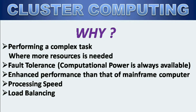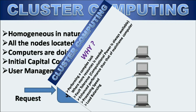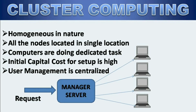Processing speed is also high and it balances the load — the complex task is distributed among various nodes, so load balancing is done in cluster computing. It is homogeneous in nature, meaning all the nodes, all the data points, all the computers are working on the same platform. All nodes are located in a single location. Computers are doing dedicated tasks — whatever task is assigned to individual nodes, they are dedicated to doing that. The initial capital cost for setup is very high.